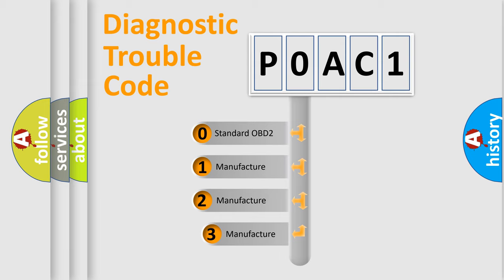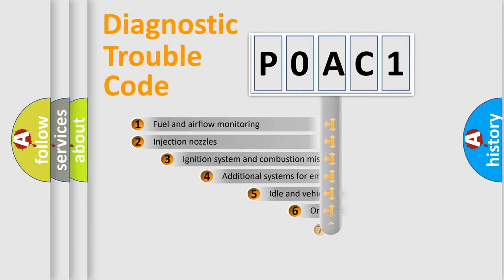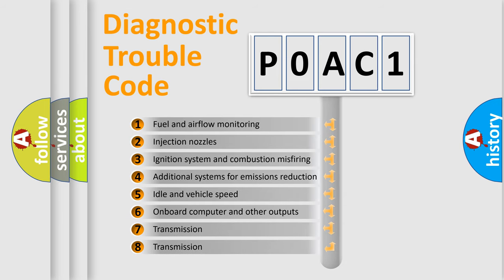If the second character is expressed as zero, it is a standardized error. In the case of numbers 1, 2, or 3, it is a manufacturer-specific error. The third character specifies a subset of errors.